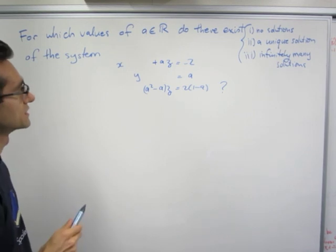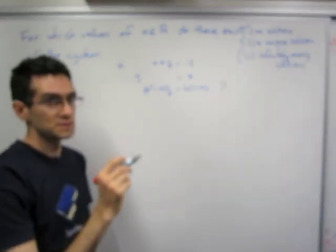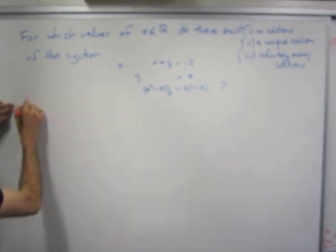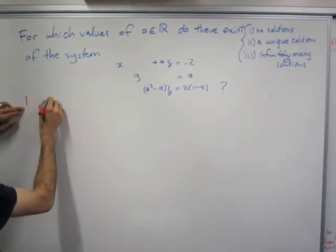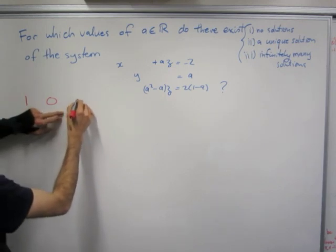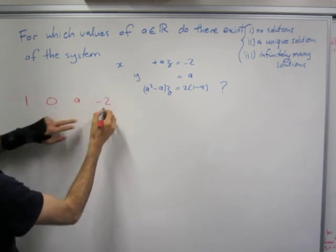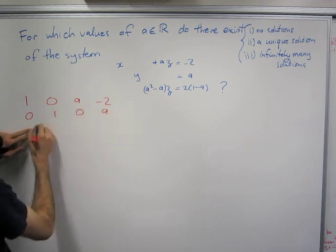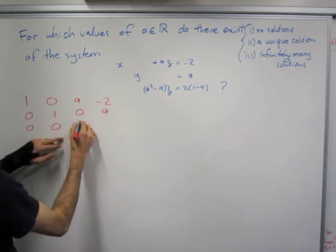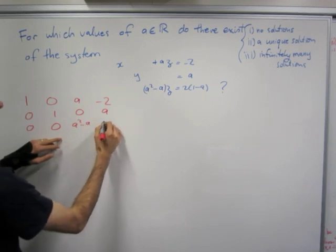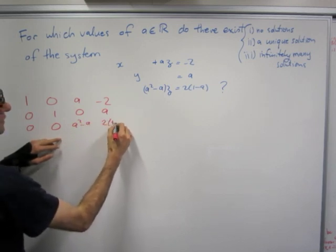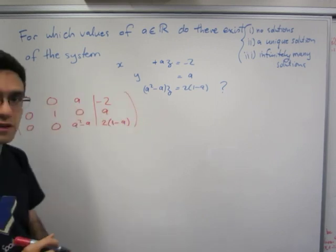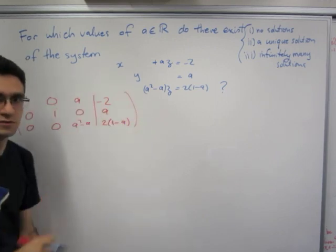So firstly, we'll write it into an augmented matrix. So we have over here, coefficient x is 1, coefficient y is 0, coefficient z is a, that is minus 2. Second row: 0, 1, 0, a. Third row: 0, 0, a squared minus a, and 2, 1, minus a. So this is the augmented matrix for our system of linear equations.